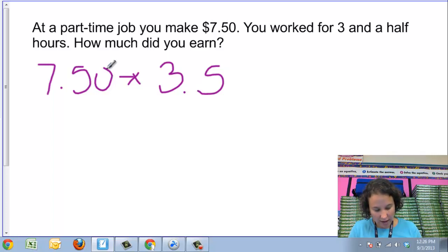I'm going to actually get rid of that zero because 7.5 is the same as 7.50, so that zero is not really adding any additional information there.